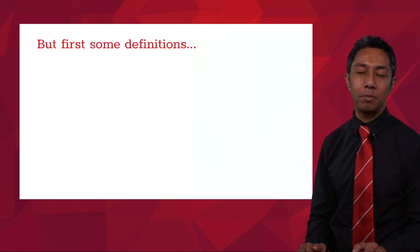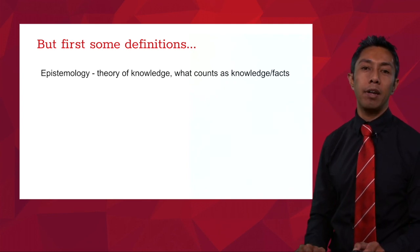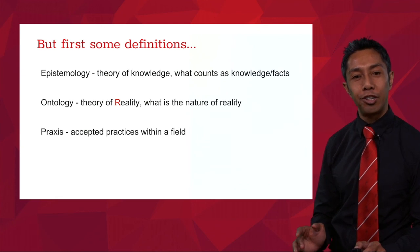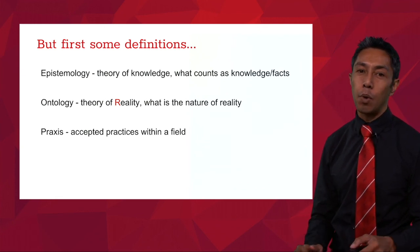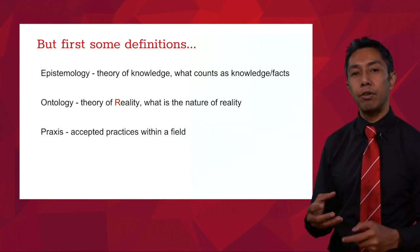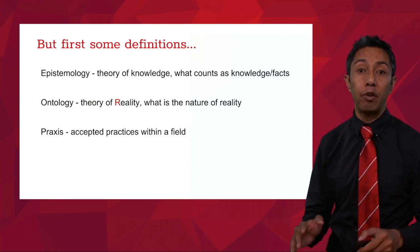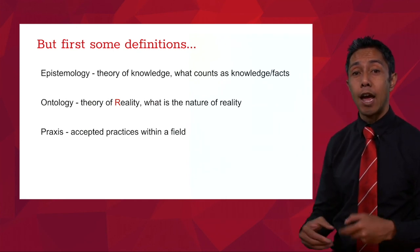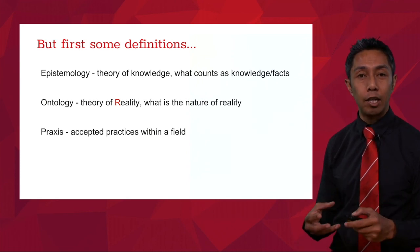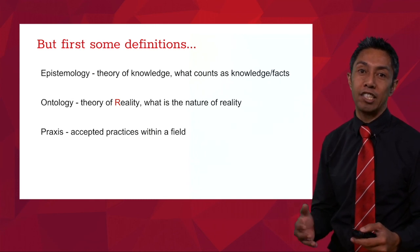First we need to cover some definitions. We're going to be talking about three key terms: epistemology, ontology and praxis. When we talk about epistemology, we're really talking about the theory of knowledge — what counts as knowledge within a particular field. We've already covered that in mathematics, and now we're going to do the same for science. Science has a particular way of looking at what actually counts as knowledge and what counts as facts.